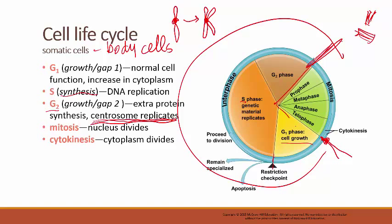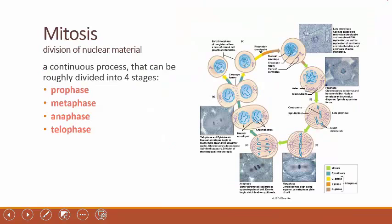Then the cell goes into a process called mitosis. Mitosis is the period of time when the nucleus will divide, producing two identical nuclei that will be the nuclei for the two daughter cells. And then finally we wrap up with a process called cytokinesis — the division of all the cytoplasm. So mitosis is nuclear division; cytokinesis is cytoplasm division. You've now seen interphase with G1, S, and G2.